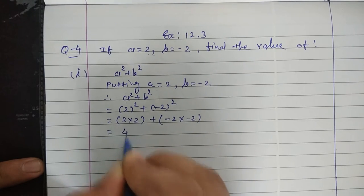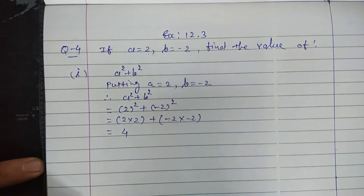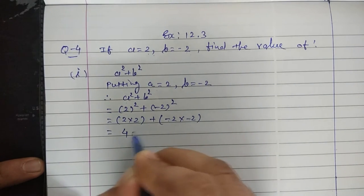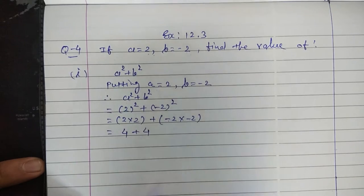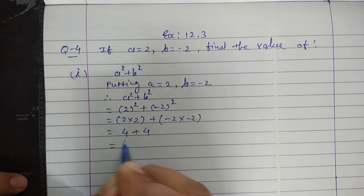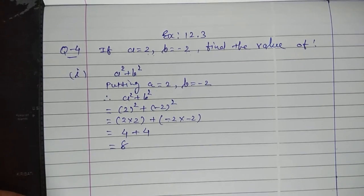2 squared is 4. Minus 2 multiplied by minus 2 — minus times minus gives plus — so that is also 4. 4 plus 4 is 8. 8 is our answer.